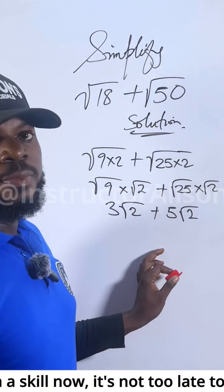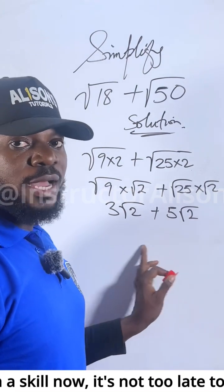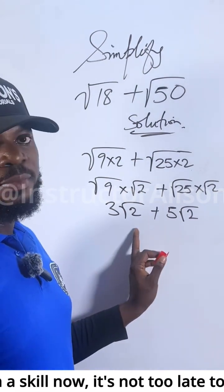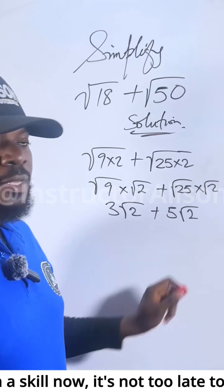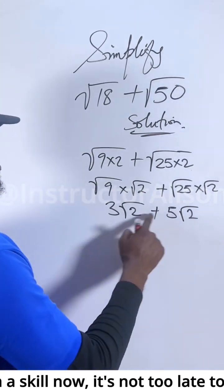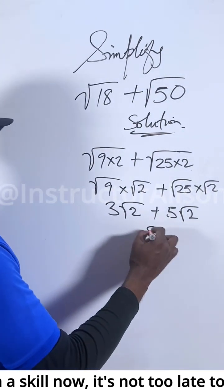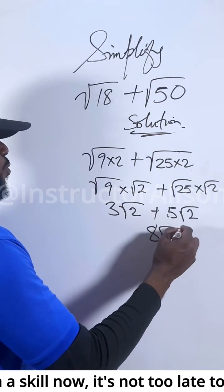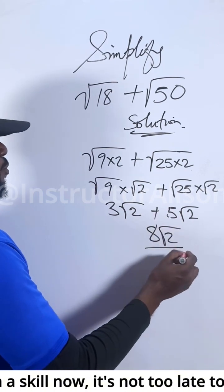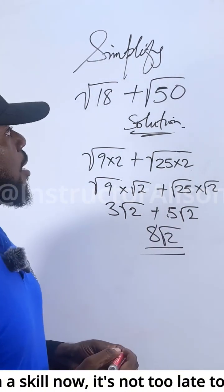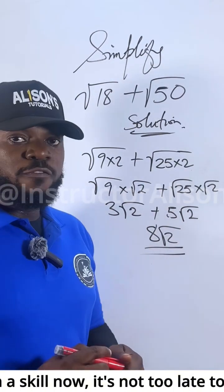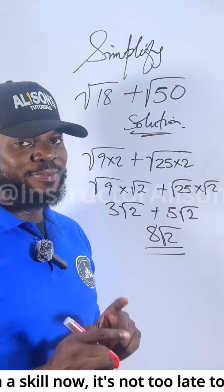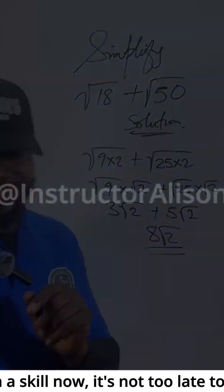Now you can add these two together because the contents inside the root are the same. If they were different, you could not add them. So 3 plus 5 gives you 8, and the square root of 2 is common, so the answer is 8√2. That is the solution to this problem. I hope you found this video helpful — please make sure to like, share, and follow me for more. Peace and love.